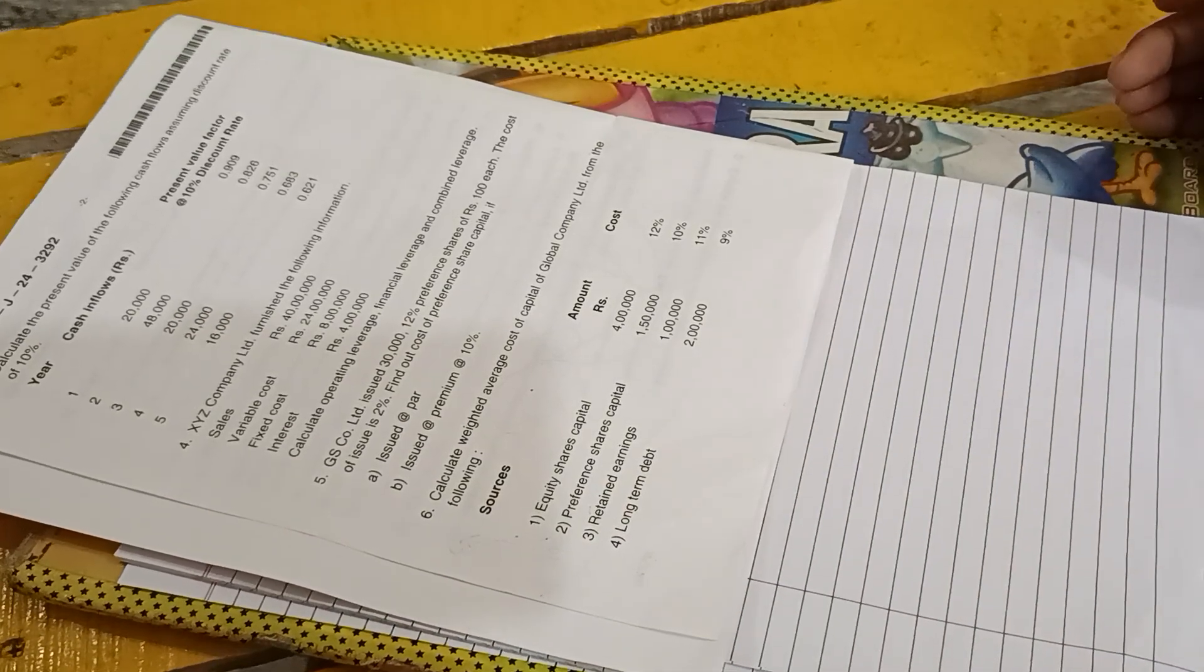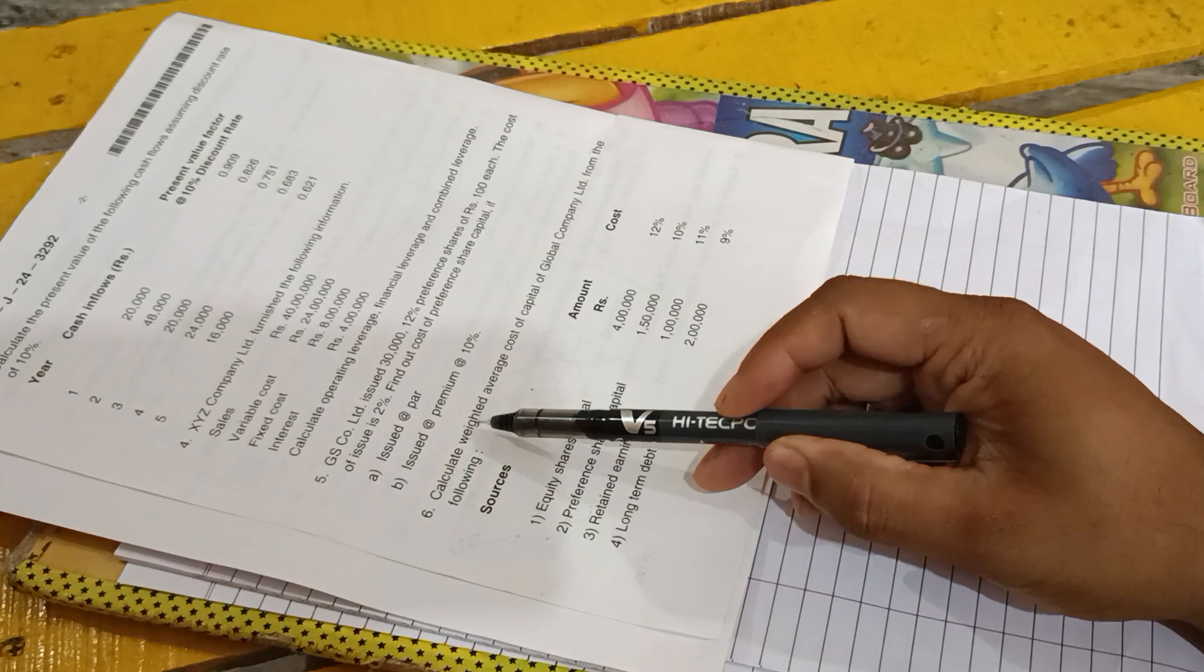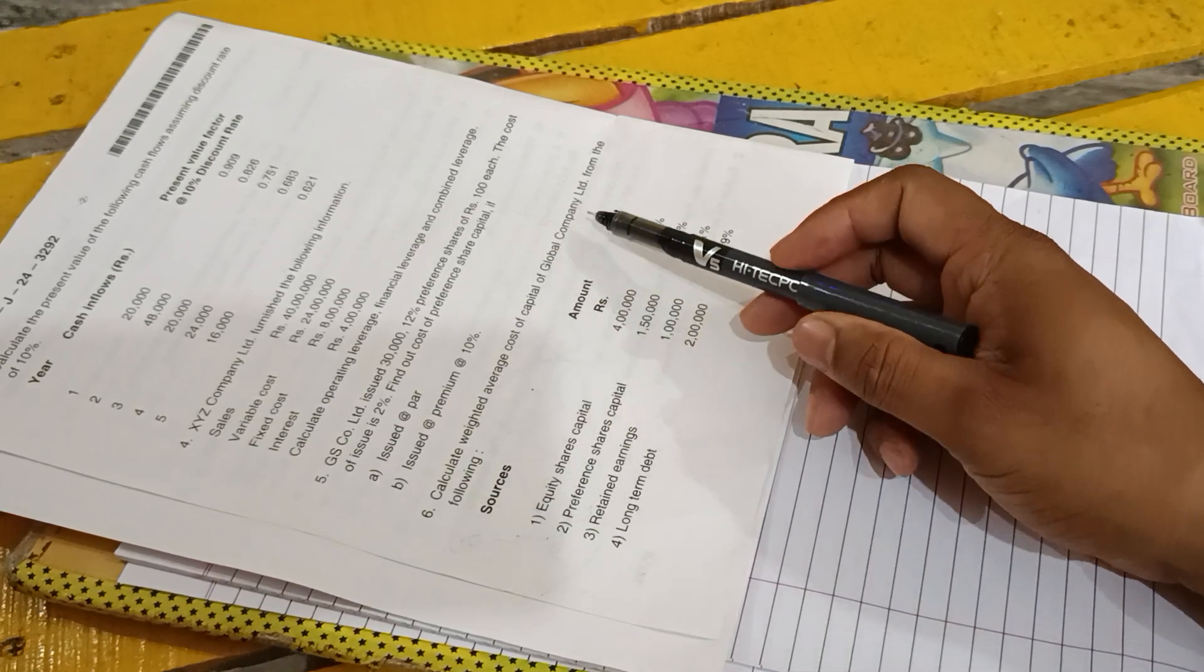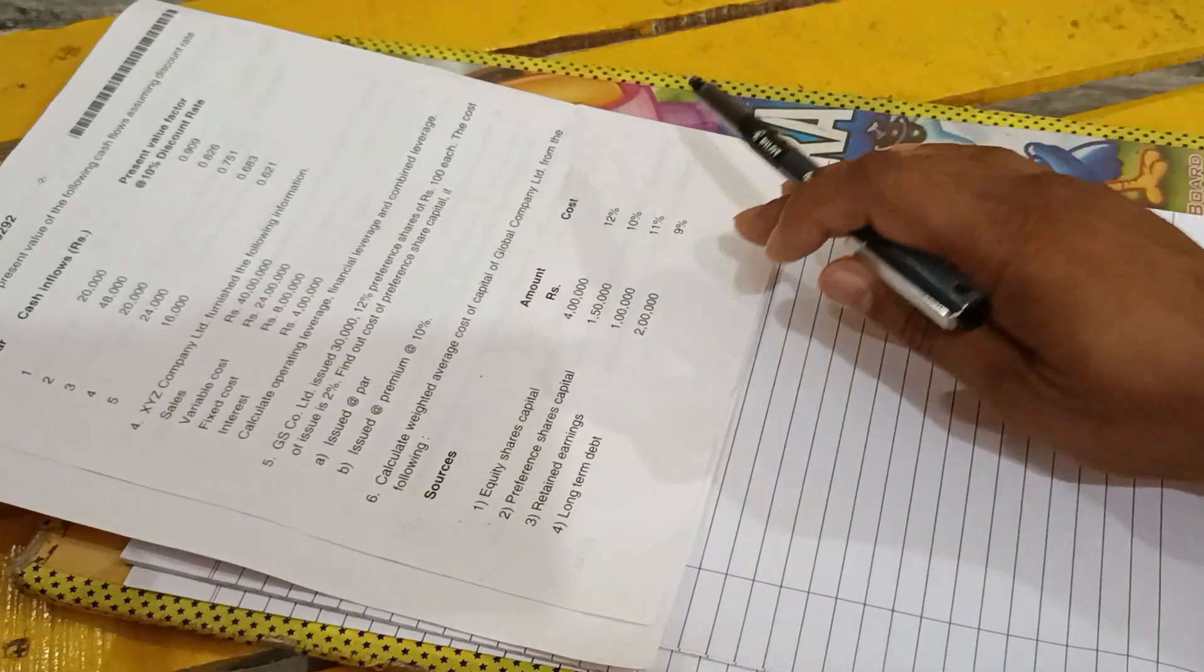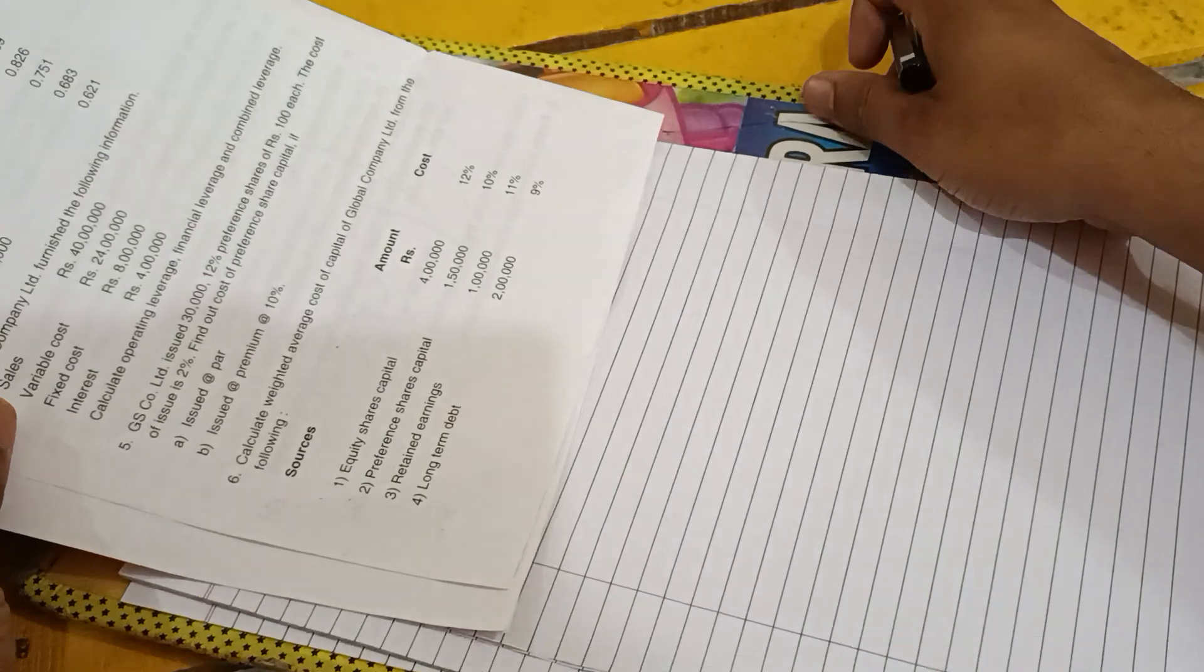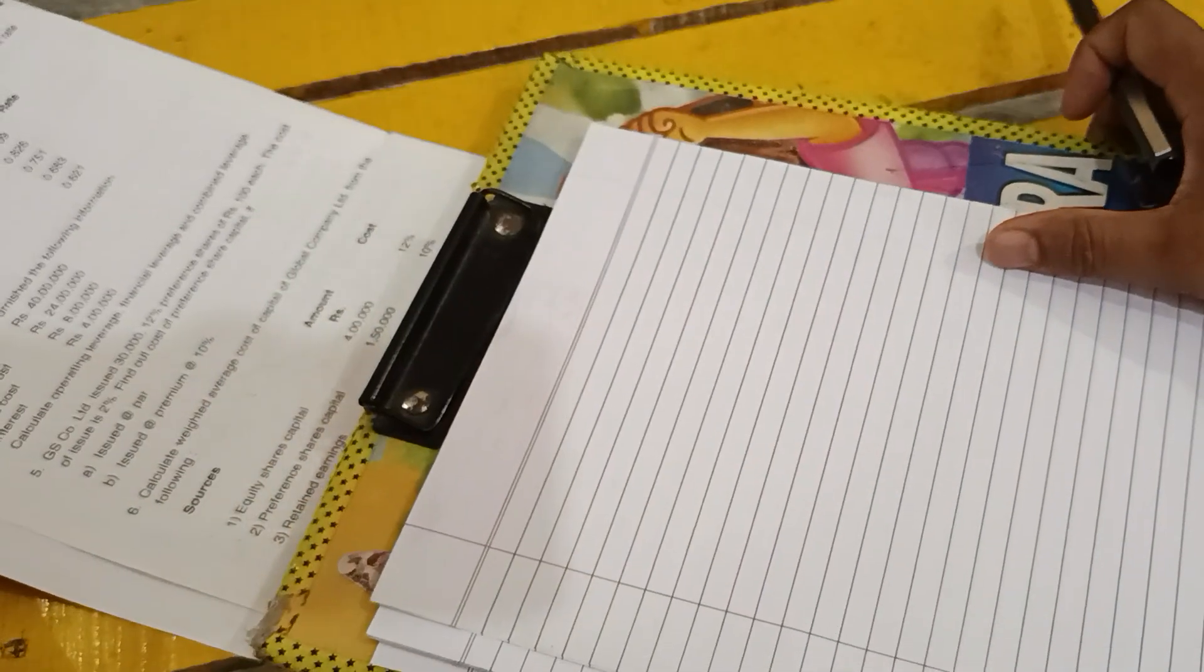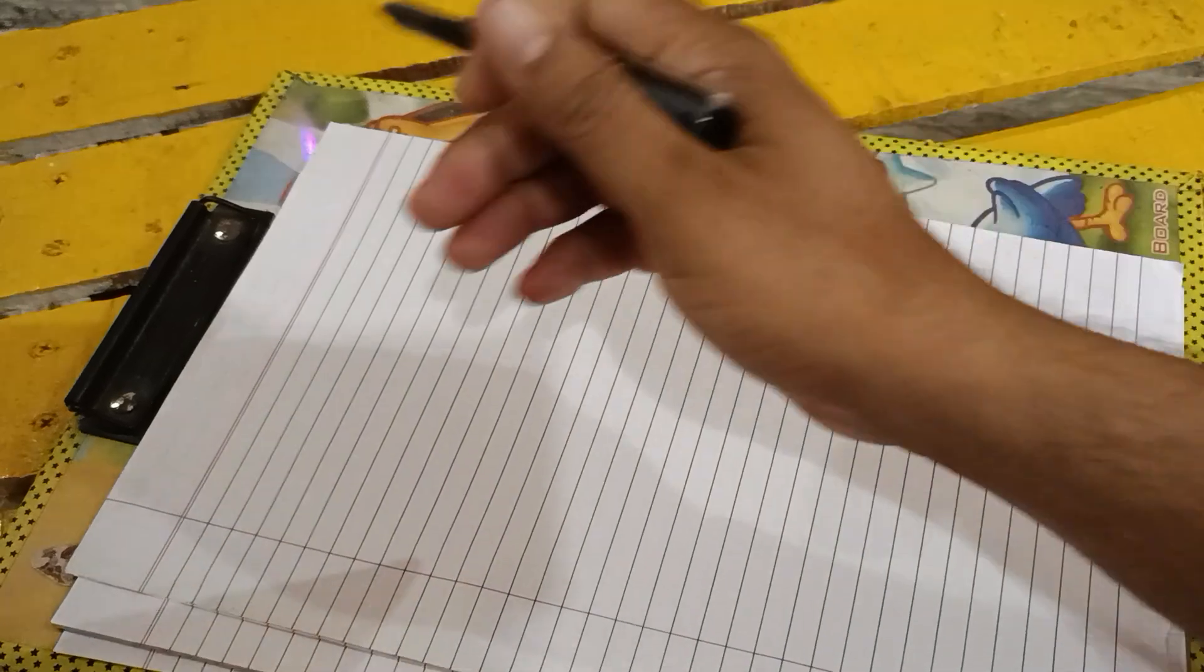Hello students, today we'll be solving the second method of the same problem: calculate weighted average cost of capital of Global Company Limited from the following. This is the second method. The first method has been solved in the previous video, please have a look at it. This method is a bit more simple and easier.